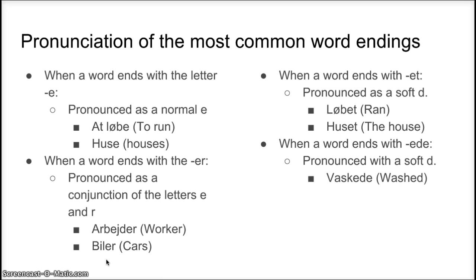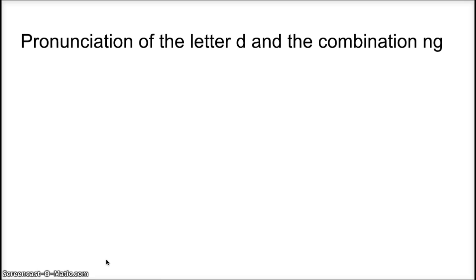The second most common rule relates to the letter D and the combination of the letters N and G. If the letter D follows a vowel, it is pronounced as a soft D. So this is a very important rule that makes it easy for you to remember when the D should be soft. If the letter follows a vowel, it is pronounced as a soft D.